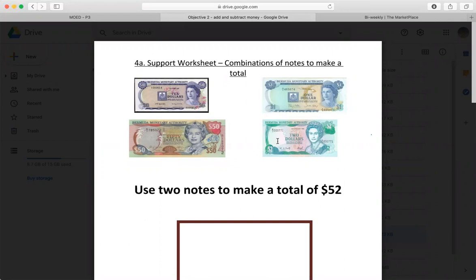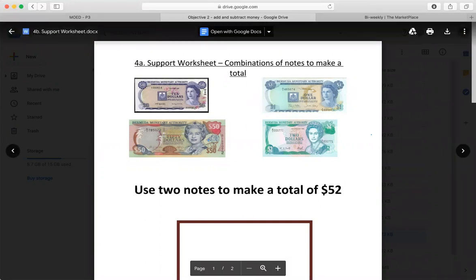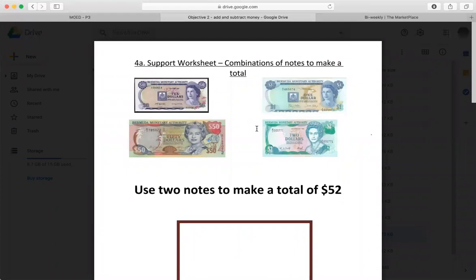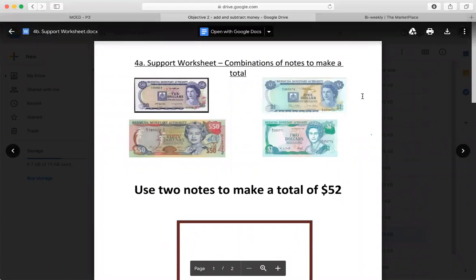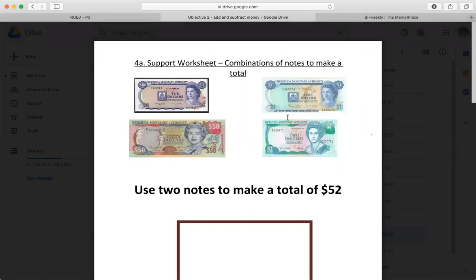Which two of these notes would you use to make a total of $52? Think about it. You can only use two. So don't tell me you're going to use five $10 bills. It's telling you you can only pick two. So I'm going to leave that problem for you to do.